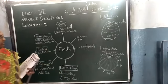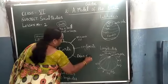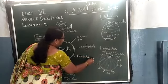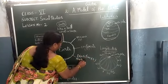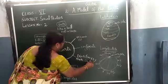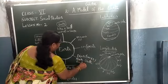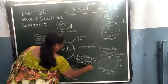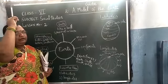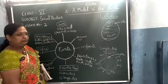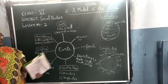Next, directions. How many directions are there? There are 4 directions: North, South, East, and West.